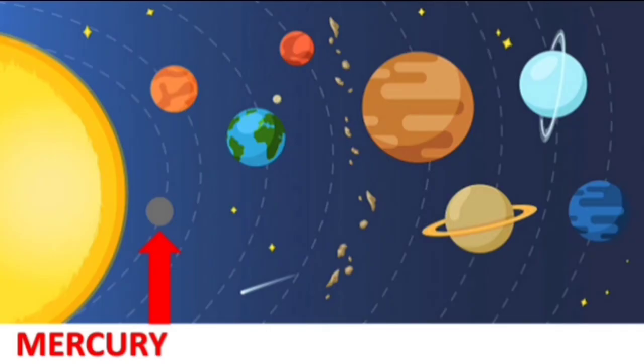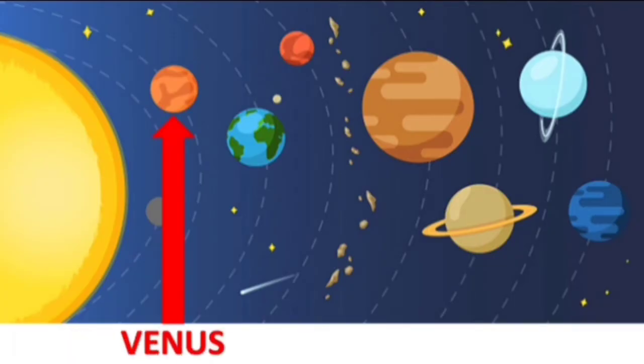Mercury is the closest planet to the Sun. It's also the smallest planet, it's gray in color and very hot. The second planet closest to the Sun is called Venus. It's the brightest planet in the solar system and its color is orange and brown. The third planet from the Sun is called Earth. That's where we live, it's the only planet we know of with life on it and it's green and blue.